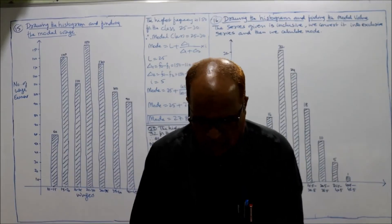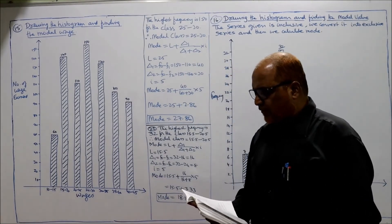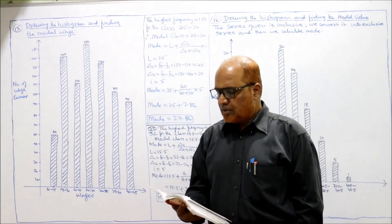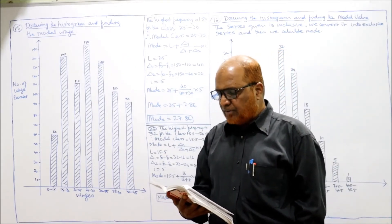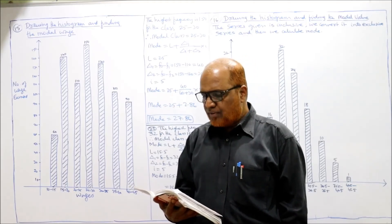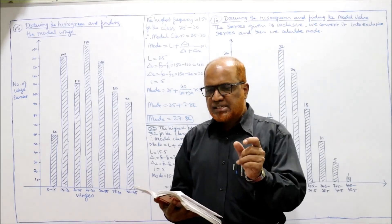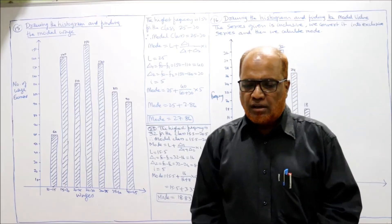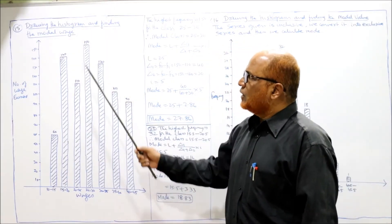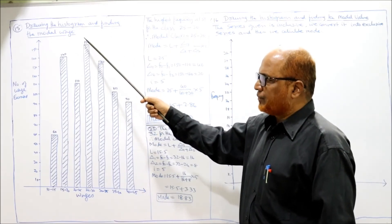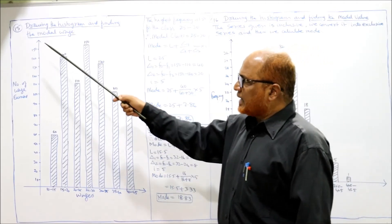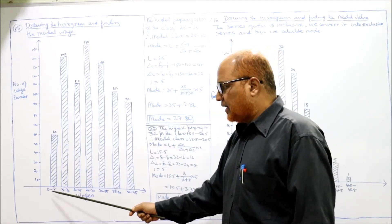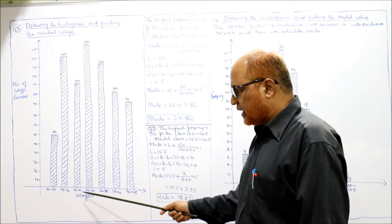Problem 15: draw a histogram for the following distribution and find the modal wage. Wages are given: 10 to 15, 15 to 20 — it's a continuous series. Number of wage earners are the frequencies. On the graph paper, x-axis shows wages (10, 15, 20, 25...), y-axis shows number of wage earners. Scale: 1 cm = 10 units, up to maximum 150.